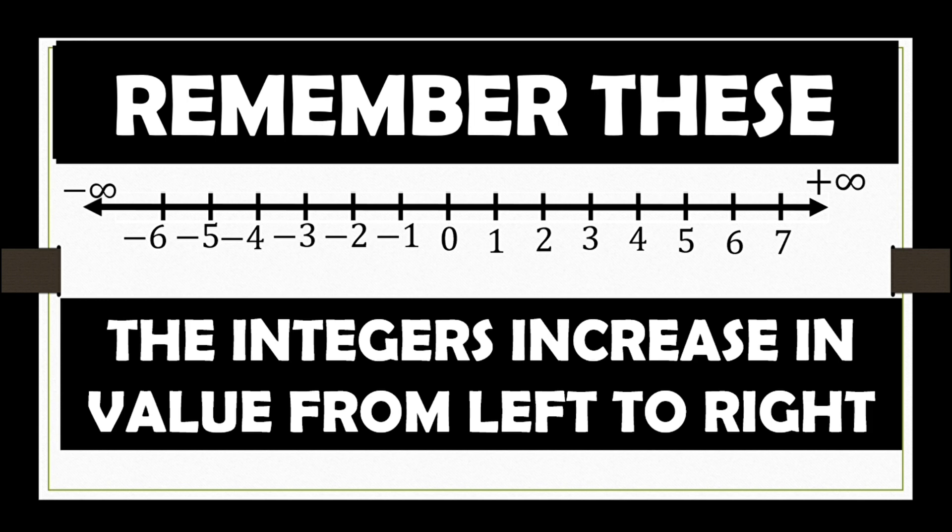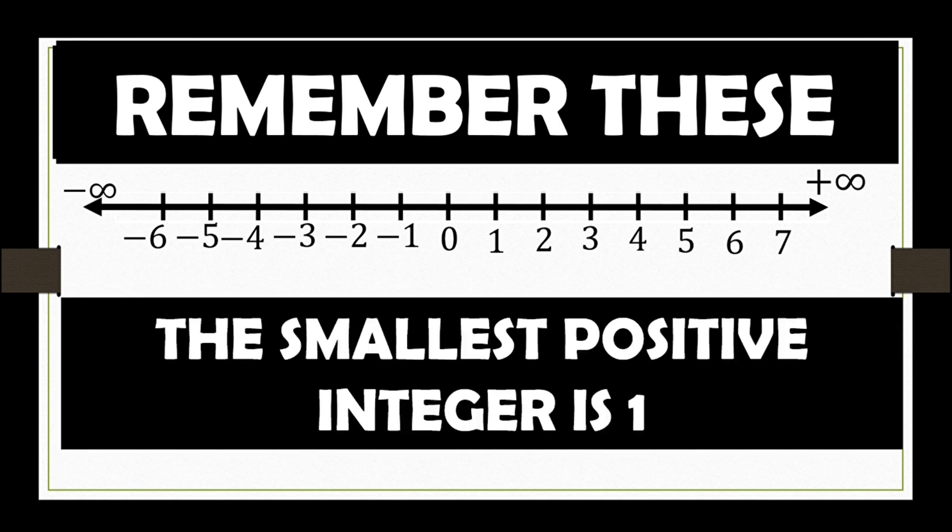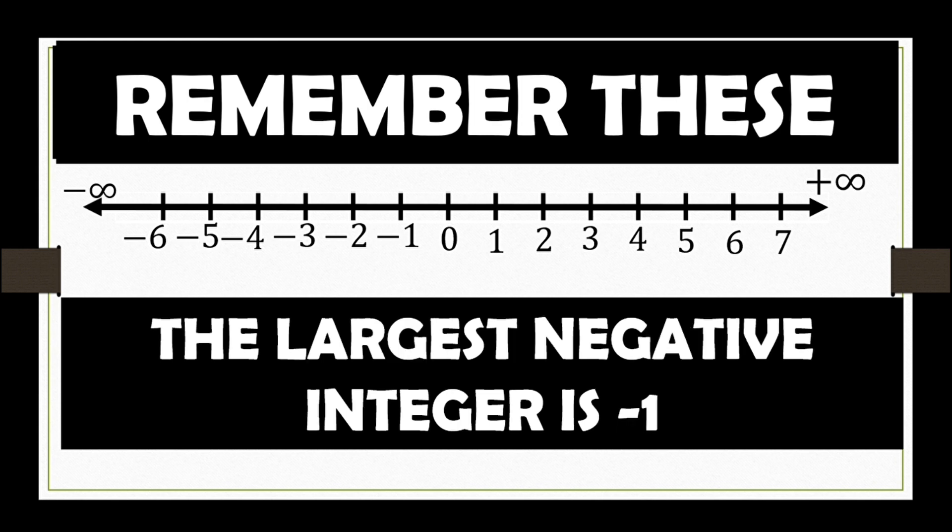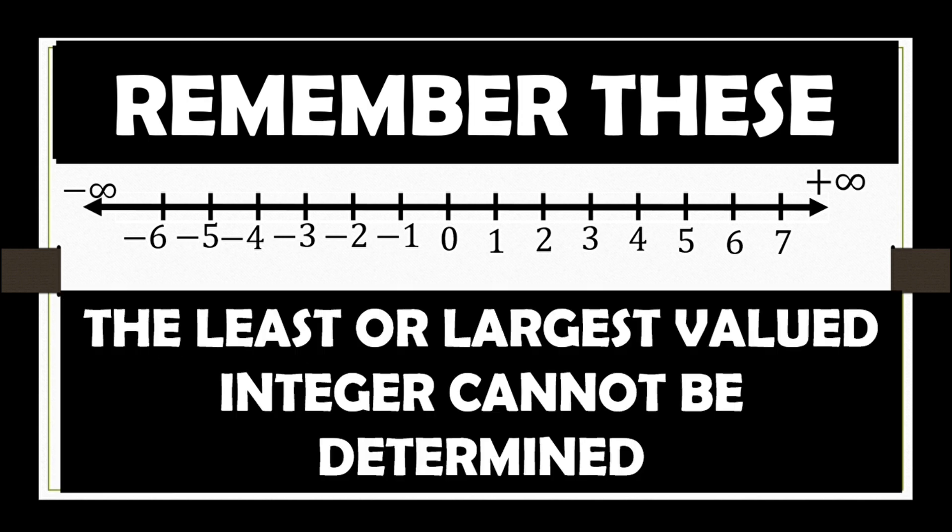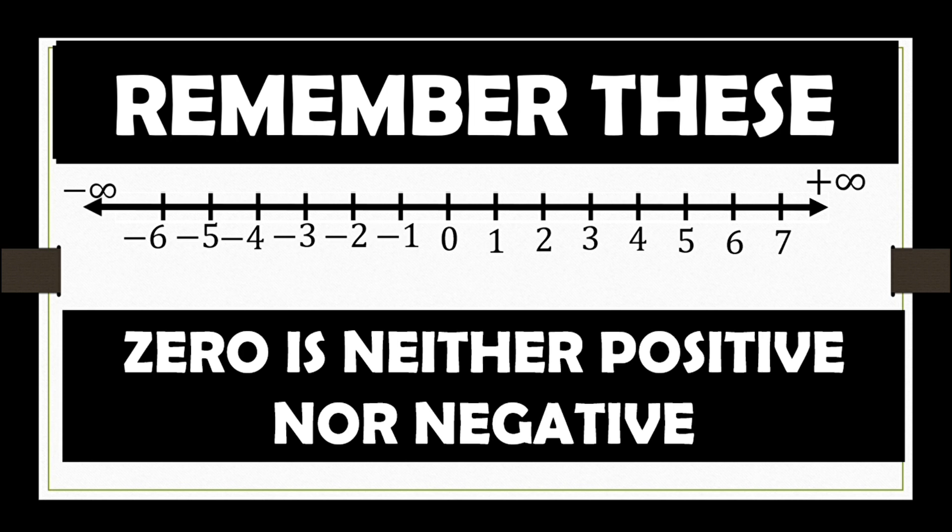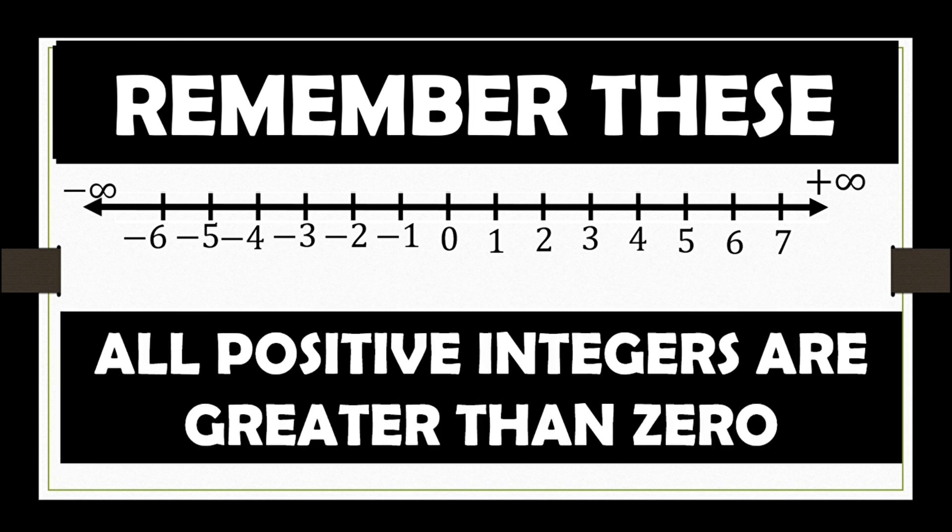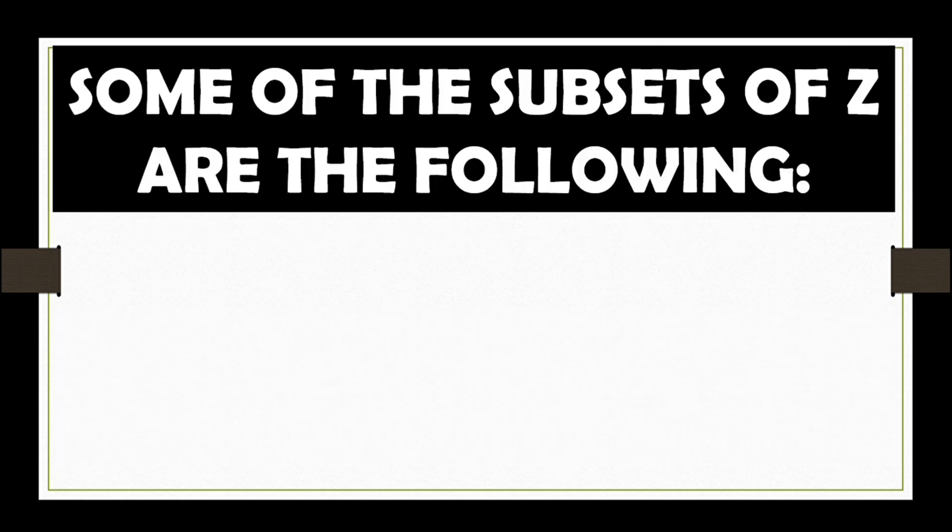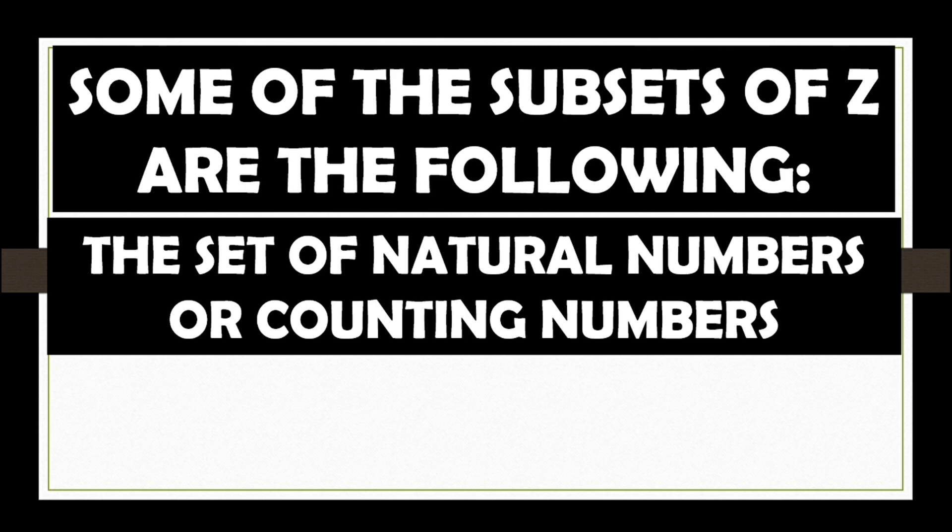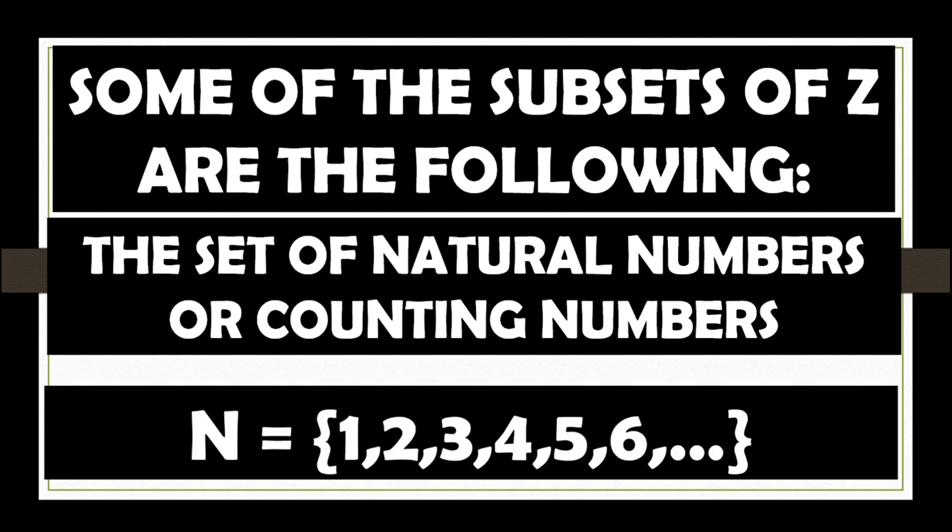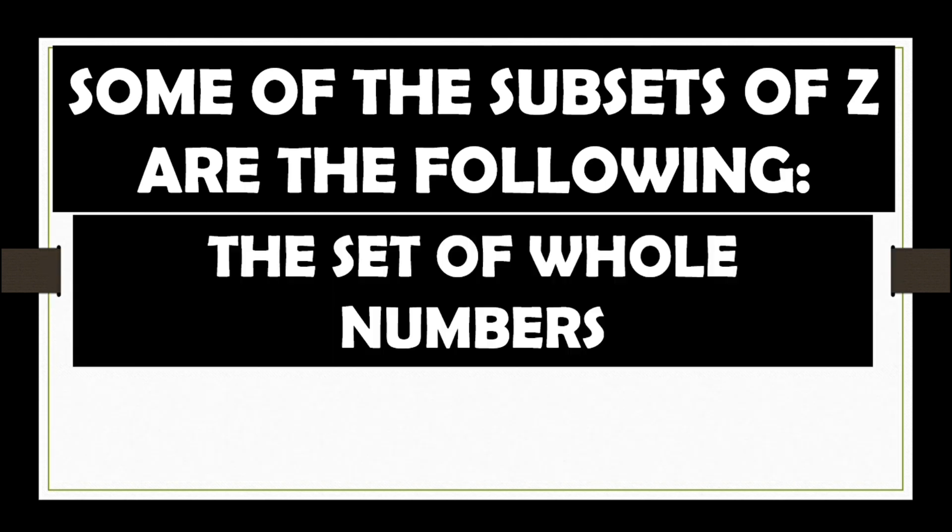The integers increase in value from left to right. The smallest positive integer is 1. The largest negative integer is negative 1. The least or largest valued integer cannot be determined. 0 is neither positive nor negative. All negative integers are less than 0, and all positive integers are greater than 0. Some of the subsets of Z are the following. First, the set of natural numbers or counting numbers. Set N consists of 1, 2, 3, 4, 5, 6 ellipses.